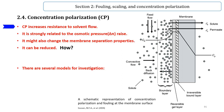Concentration polarization increases resistance to solvent flow and thus is responsible for the water flux decline observed in many membrane filtration processes. It is strongly related to the osmotic pressure rise, increase of resistance to permeation such as gel formation, and fouling susceptibility.